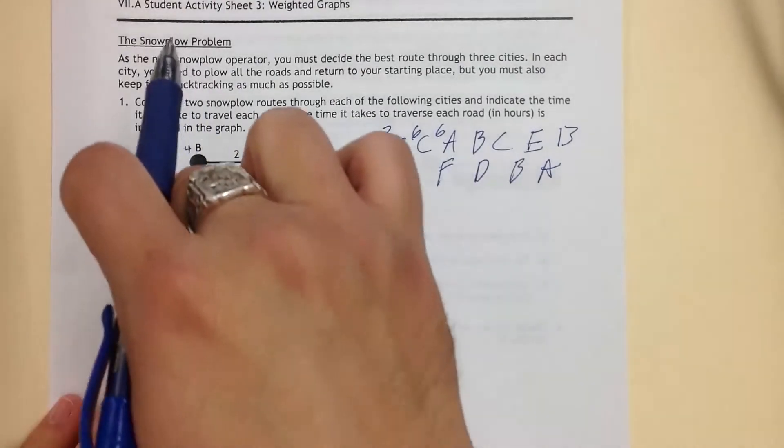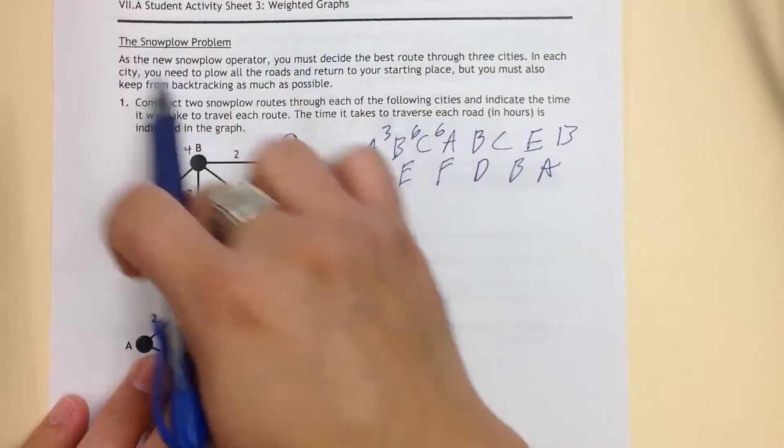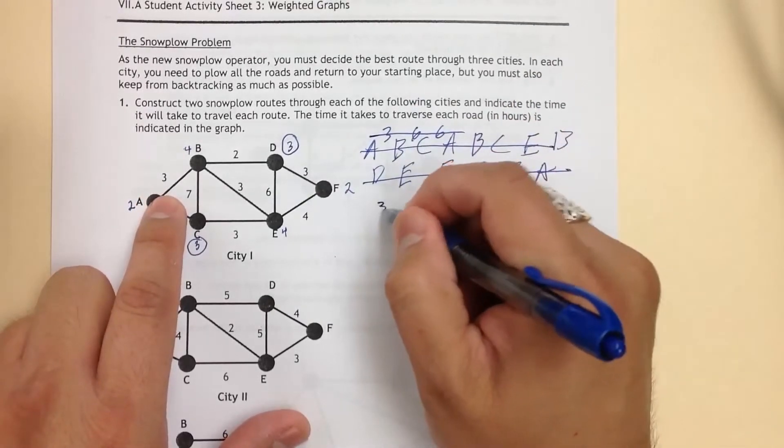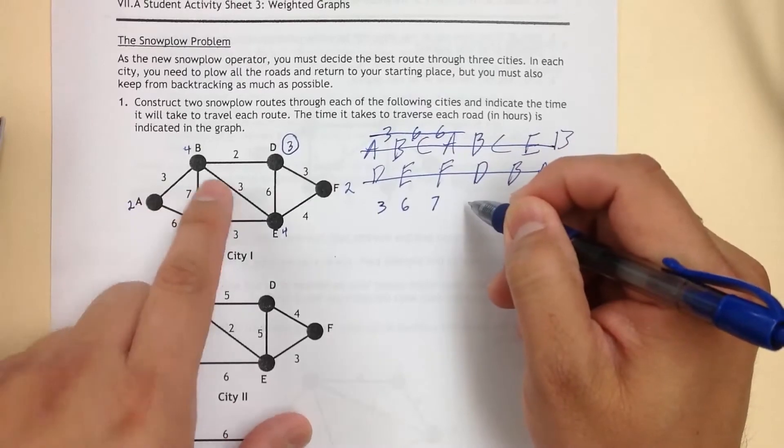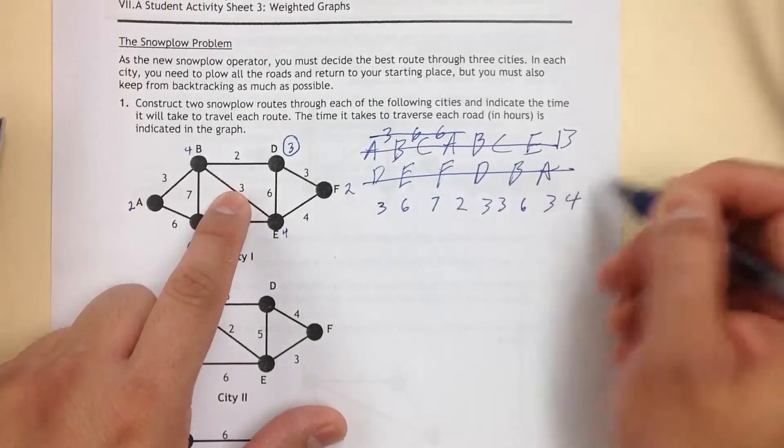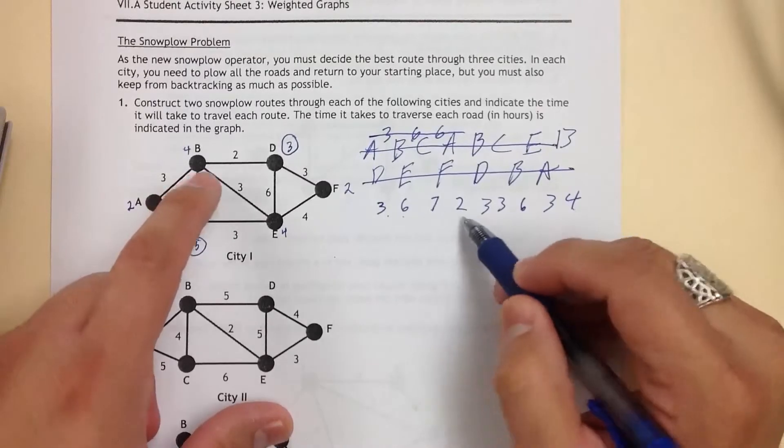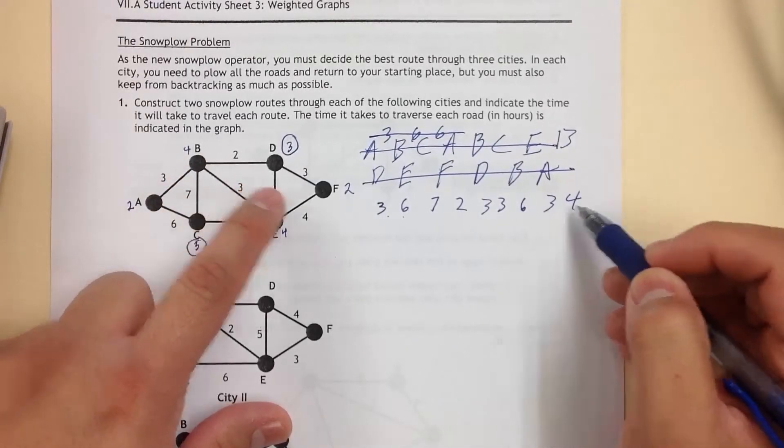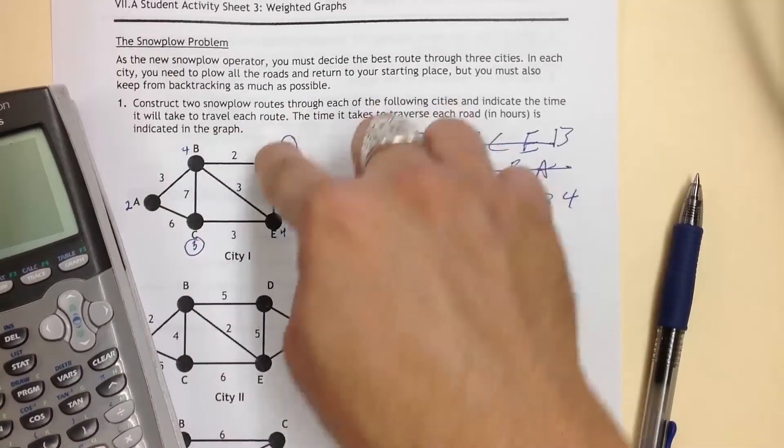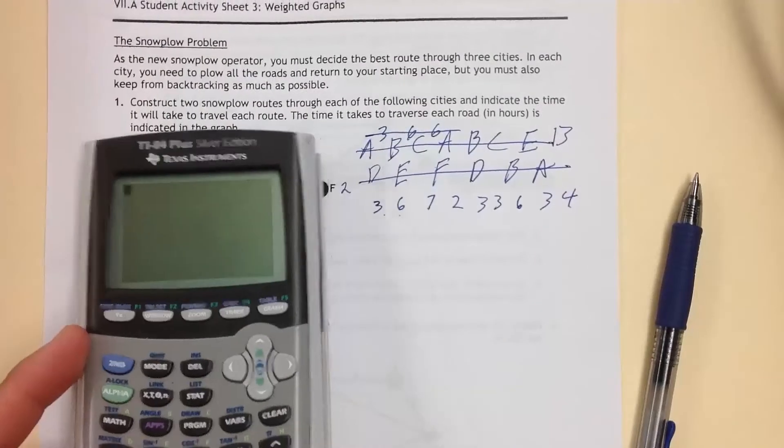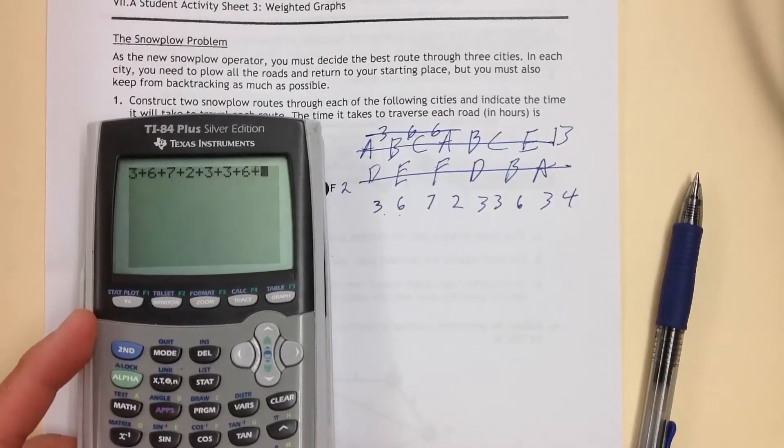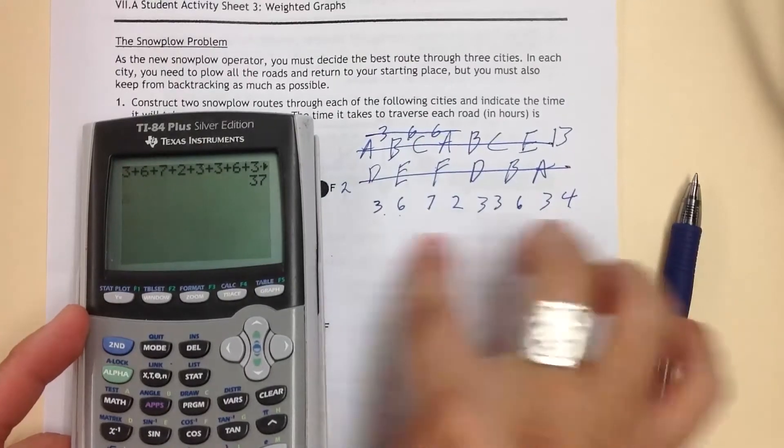So right now, the time it takes to get from this point to this point is a total of all these right here. So right now, what I'm going to do is I'm going to take all the weights. I don't need to worry about that. So we have three, six, seven, two, three, three, and then six, three, four. So I just wrote them all down. Three, six, seven, two, three, three, six, three, four. So all of them are done. I'm going to add them all together. So this is an Euler path. So we can traverse this whole thing and end up from one point to the other. So three plus six plus seven plus two plus three plus three plus six plus three plus four, so that's 37 hours just to do this right here.